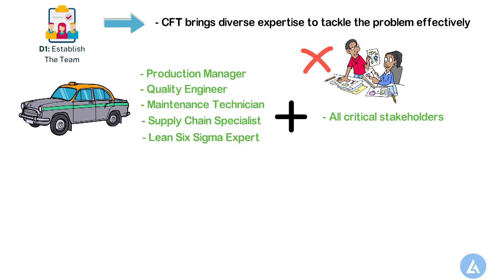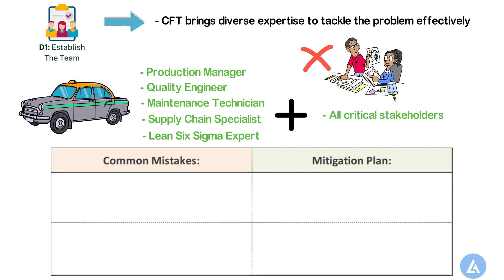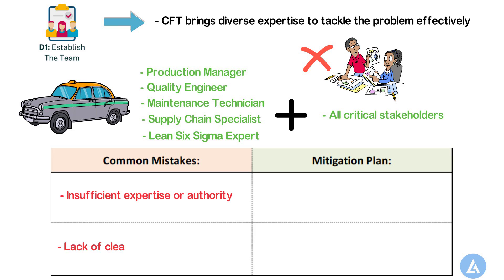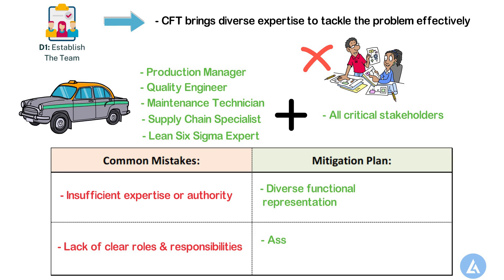The most common mistakes professionals make during D1 are selecting a team with insufficient expertise or authority, and a lack of clear roles and responsibilities. We can mitigate this risk by ensuring diverse functional representation, assigning specific roles, and communicating expectations clearly.